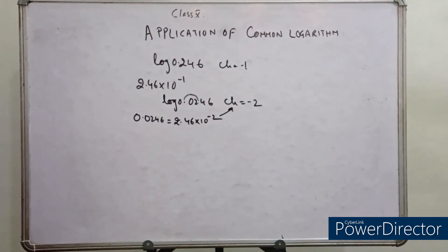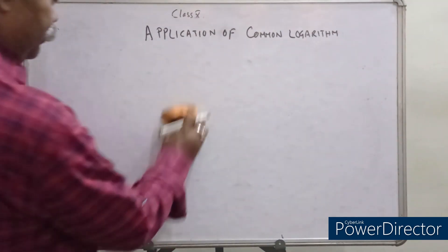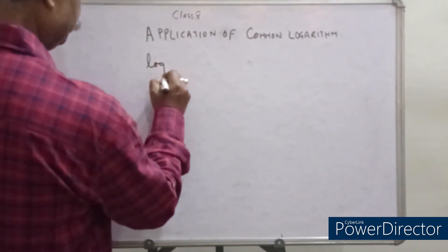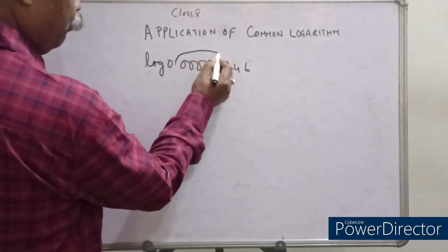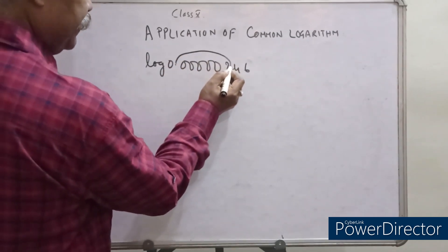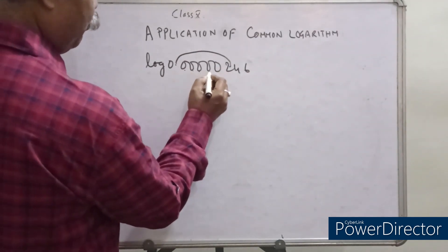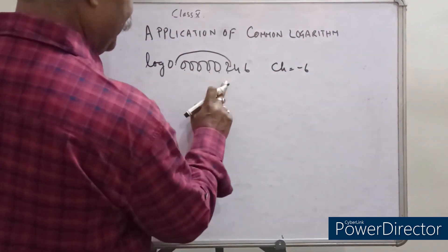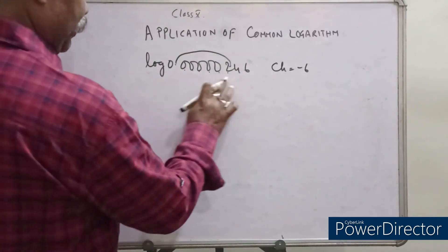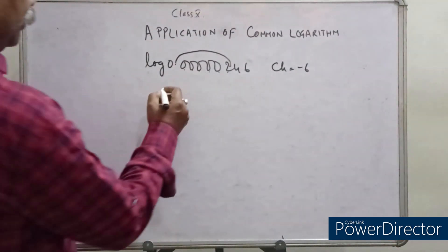This is how we find the characteristics. For a bigger example, log 0.000000246 — we shift the decimal to the first non-zero digit. The first non-zero digit is 2, and we have crossed 6 digits, so the characteristics will be minus 6. If you shift the decimal in the left direction, it is negative.